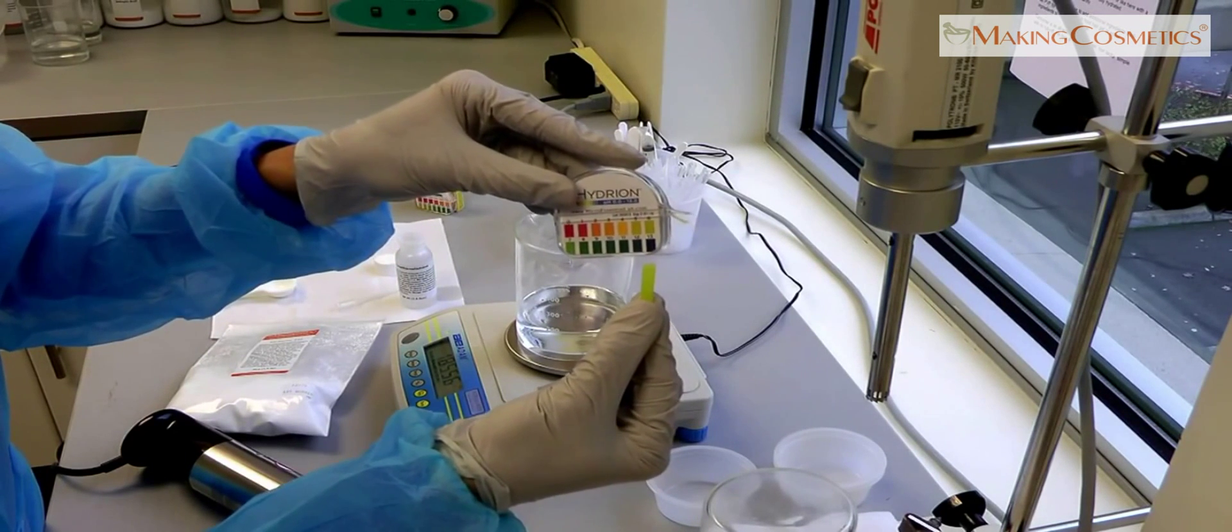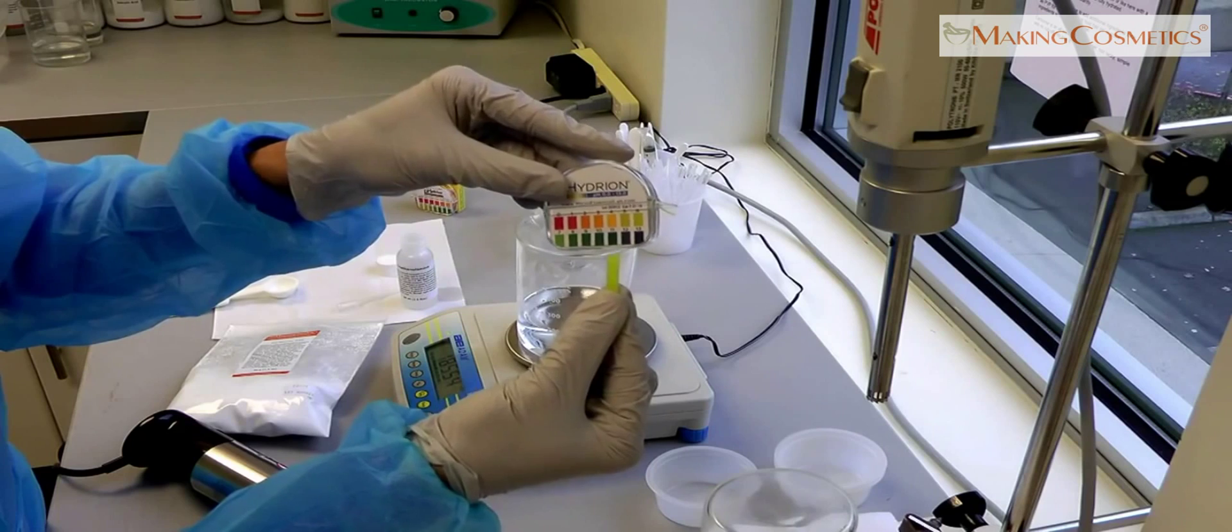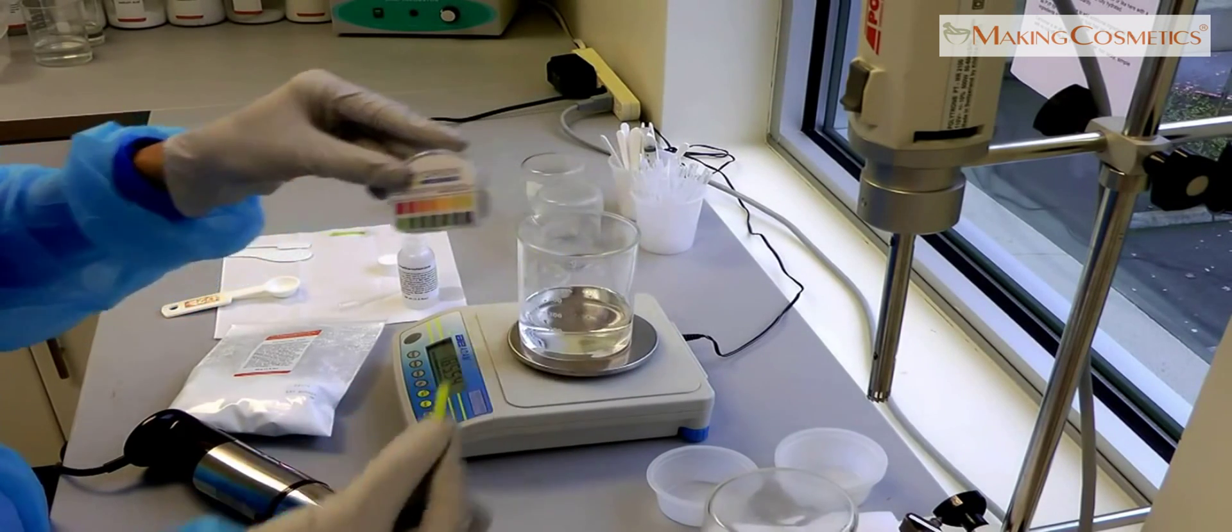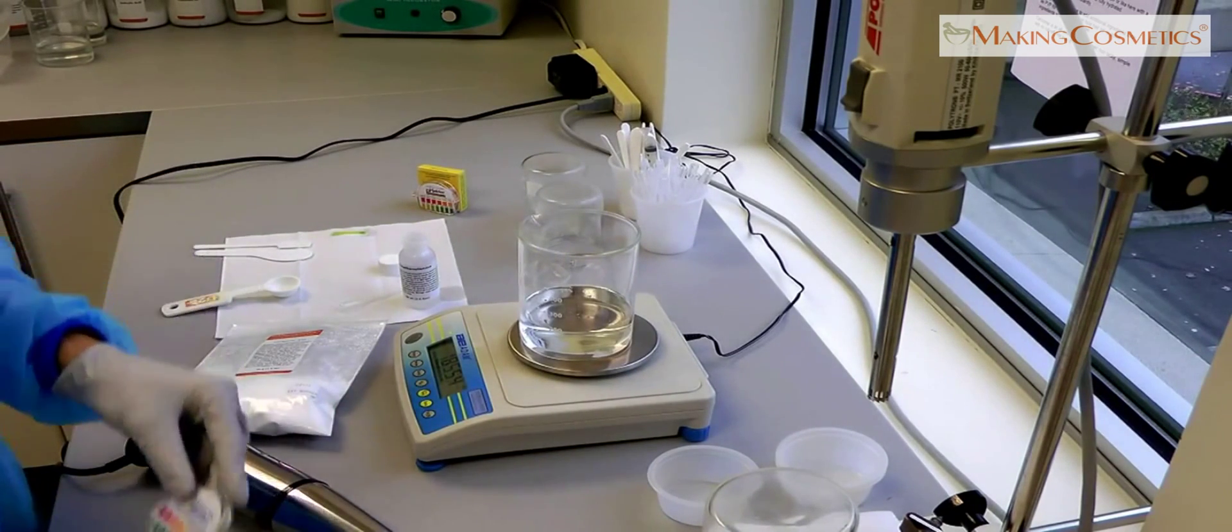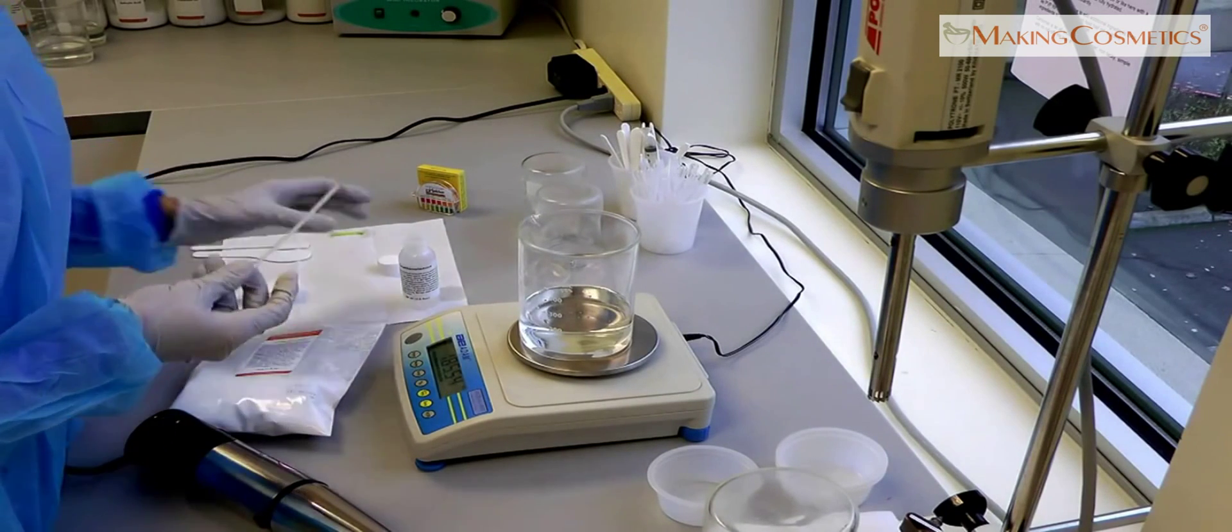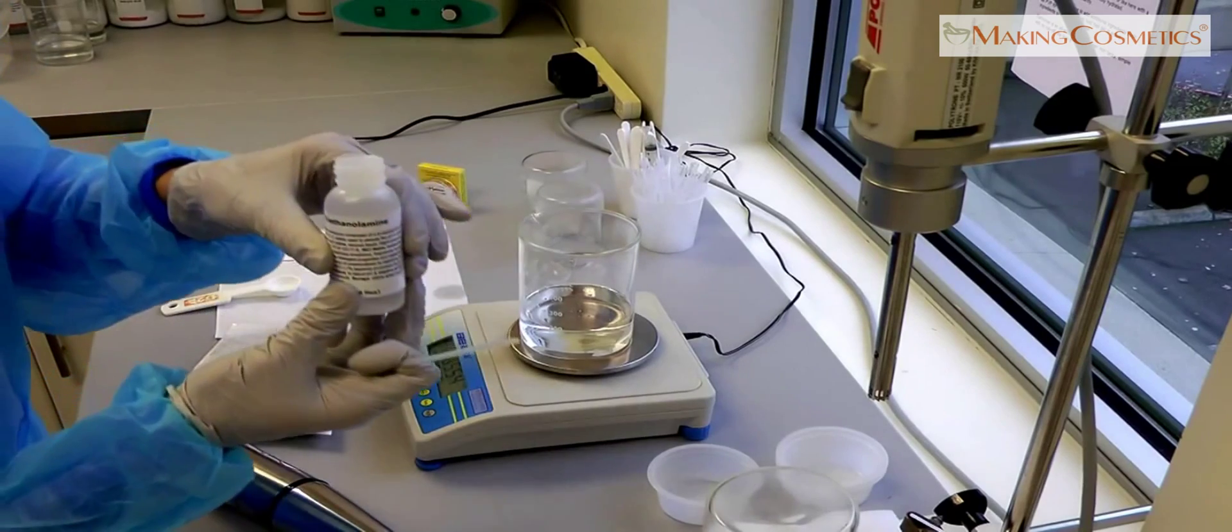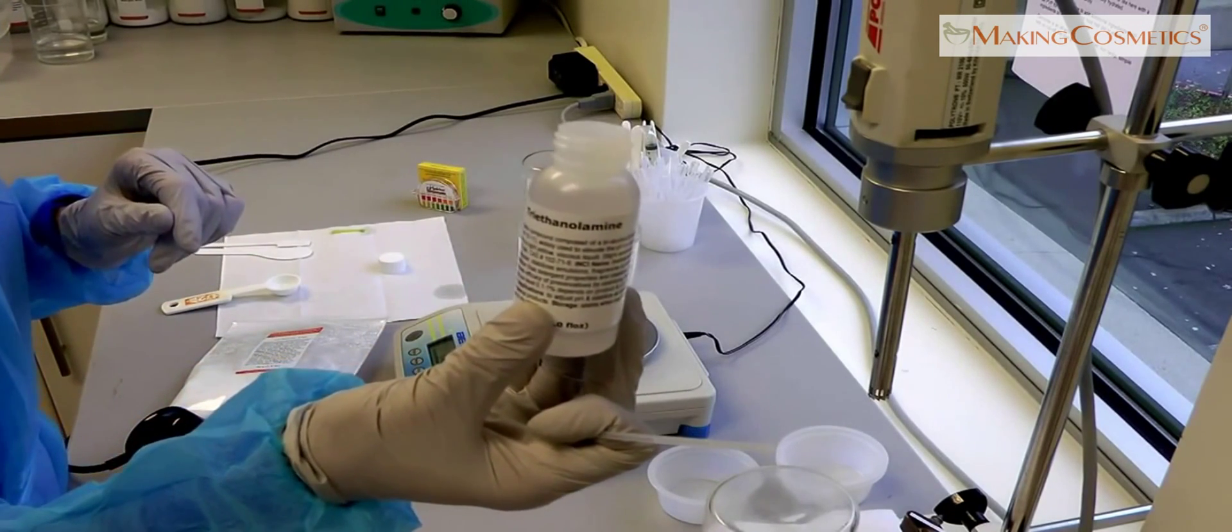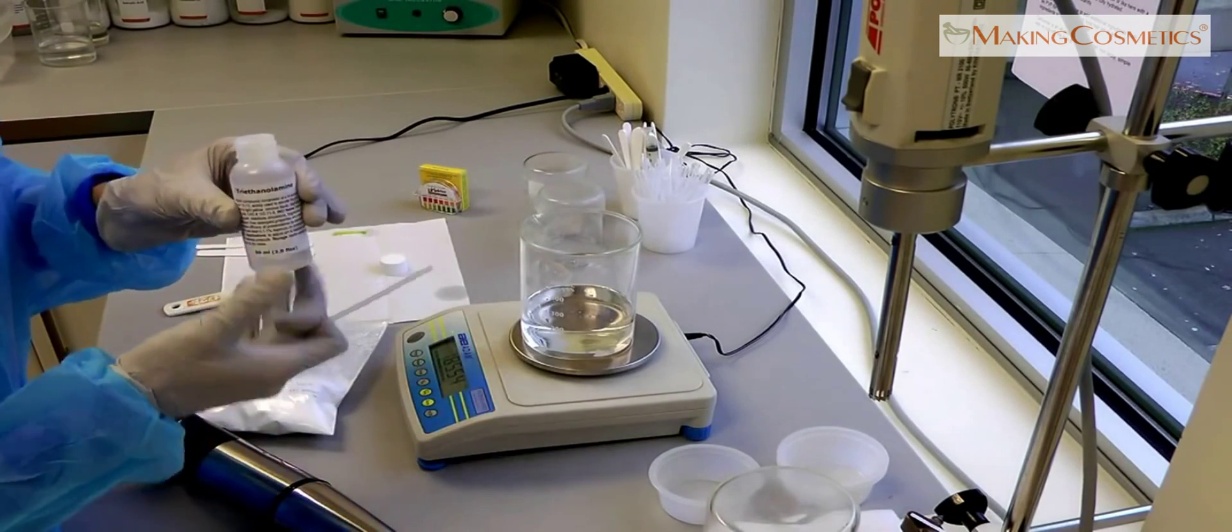In order to swell the carbomer, the pH needs to be in the green range. So we have to increase the pH, and this is done with TEA. Not much is needed.